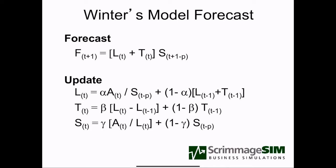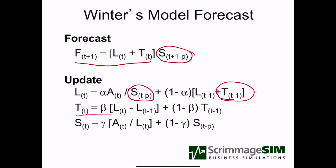The Winter's model formula looks like Holt's model with the addition of a seasonal factor. The updating of the level includes the seasonal model and Holt's model. The formula to update the trend is exactly Holt's model. The formula to update the seasonal factor is the seasonal model. So Winter's model is just a combination of the seasonal model and Holt's model, allowing us to include both trend and seasonal components in our forecast in an adaptive model.